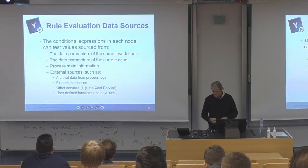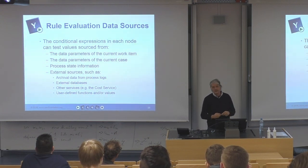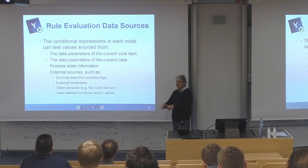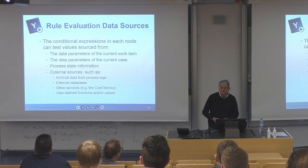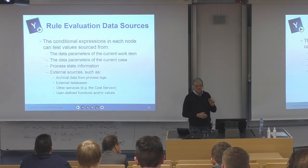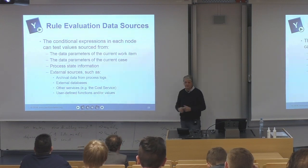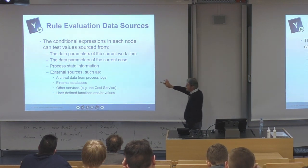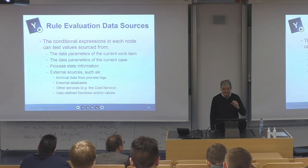Where do we get our context from? We can get it from the data of the task or work item, from the case-level data, from the process state — which tasks are complete, which are active, how long tasks have been running. Also from external sources: process logs, previous runs of the instance, historical data, external databases, other services — for example, a cost service that calculates how much a particular instance is costing the organization. There's a wide variety of data sources you can use to make those contextual decisions via the RDR tree.